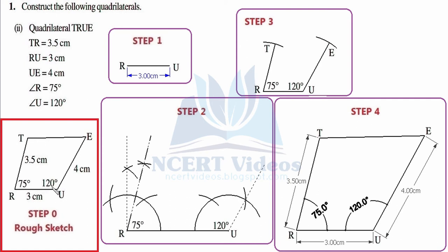At U we need to construct 120 degrees. We do this in the same step because both constructions are independent of each other. Using the same compass setting of 1 centimeter, we put the needle at vertex U and construct an arc intersecting line segment RU. We put the needle on that intersection to get 60 degrees, then once more to get 120 degrees. We connect with dotted lines to show 120 degrees. Both angles at R and U are now constructed. Pause and try it yourself.